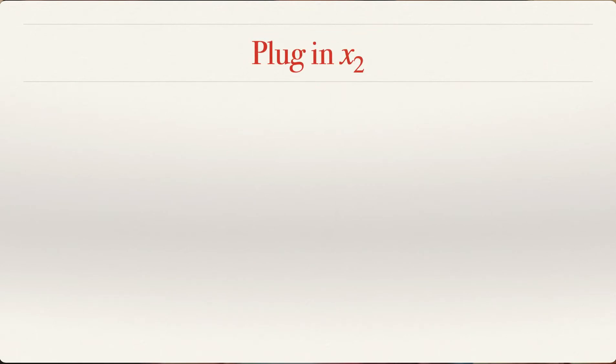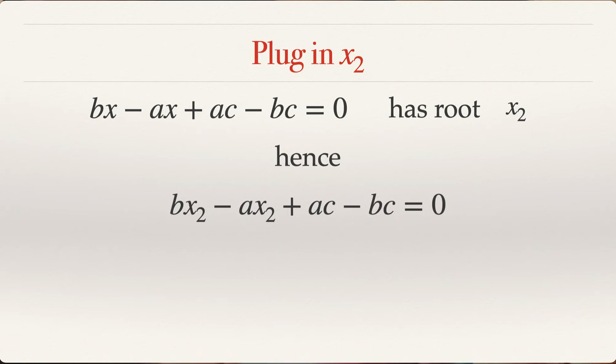Now, we plug in x2 in the new expression. This was a new expression. We know that it has root x2, which means if I plug in x2, the left hand side will be equal to zero. So let's do that: bx2 minus ax2 plus ac minus bc equal to zero. Or x2 times (b minus a) equal to c times (b minus a). Or x2 is equal to c.